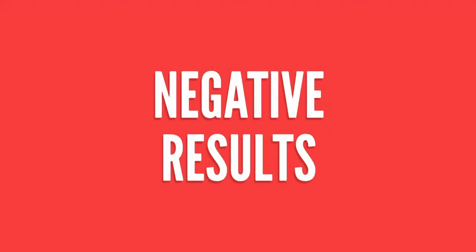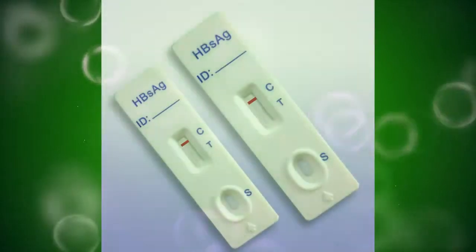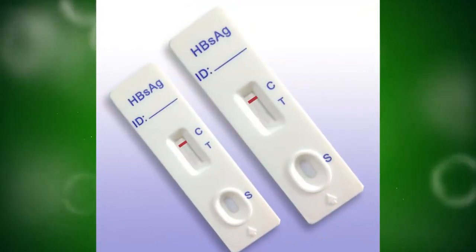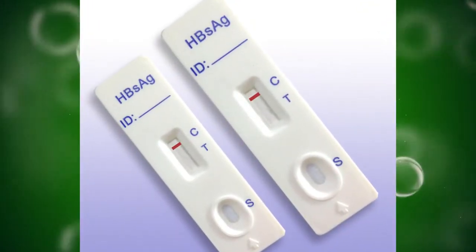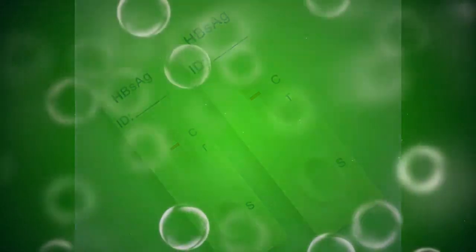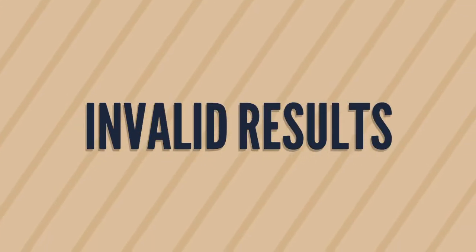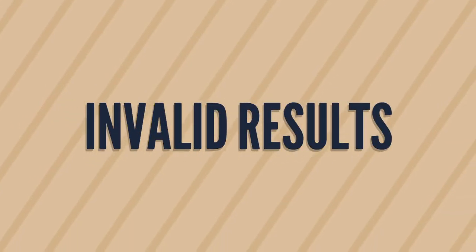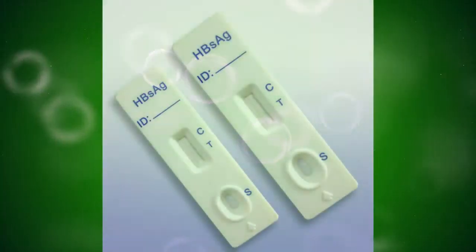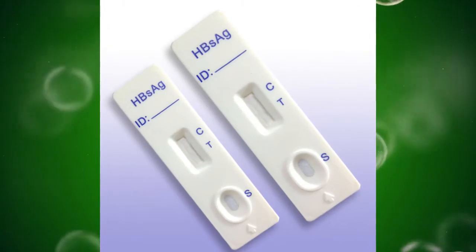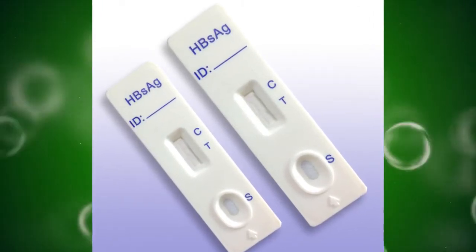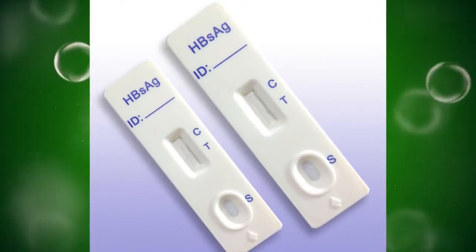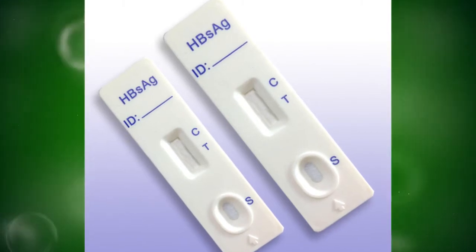Negative results: if we can see only the control line on the cassette, it means the test is negative. Invalid results: if we cannot see both the control line and the test line, it means the cassette is not working well, so we have to repeat the test.